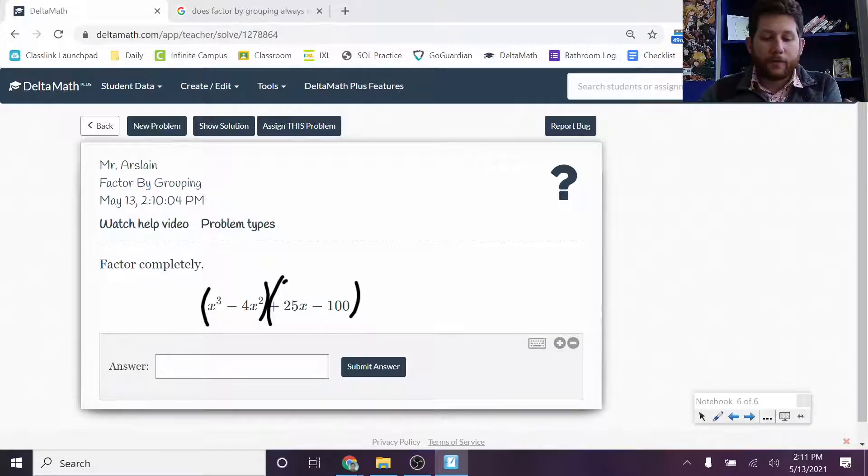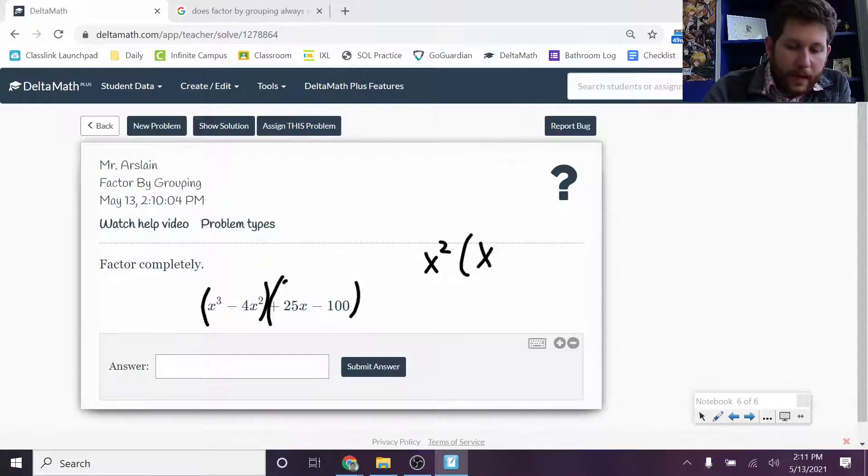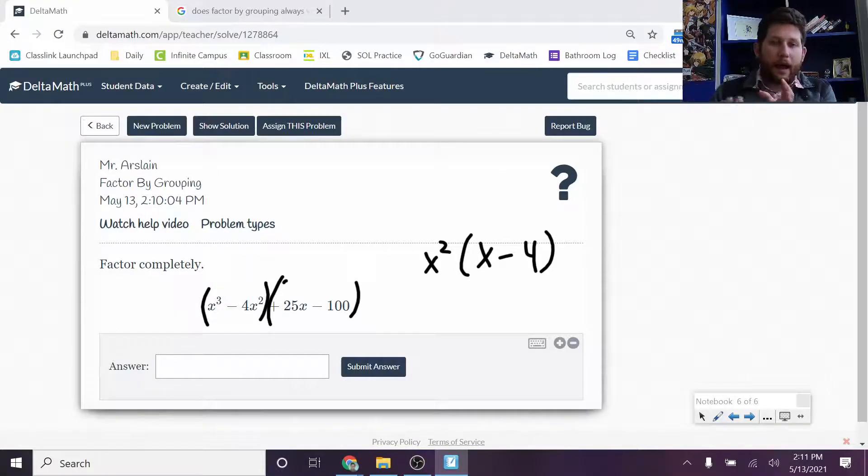Now what we're going to do is we're going to find the greatest common factor of the first two terms. So I've got the x cubed, the 4x squared. What is the greatest common factor that I could pull out of there? Well, I could pull an x squared out, right? So I could think of that first term as x squared. So it's x cubed divided by x squared would be x. Now do you see how we pulled the x squared out of the first two terms?